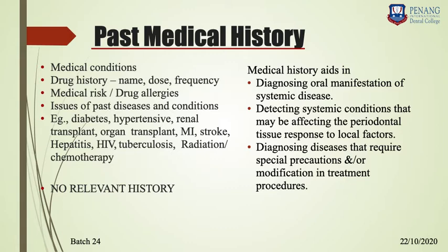You have to elicit the medical history. For example, patients taking phenytoin for epilepsy will have gingival enlargement due to the drug. If there is no relevant medical history, write 'no relevant history.' Don't write a long list of negative findings like 'patient is not diabetic, not hypertensive, not in renal failure' — if there are no findings, simply write 'no relevant history.'